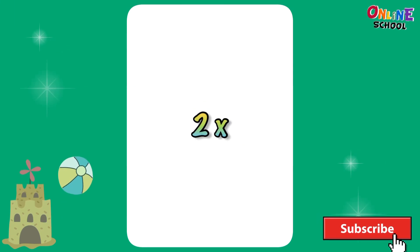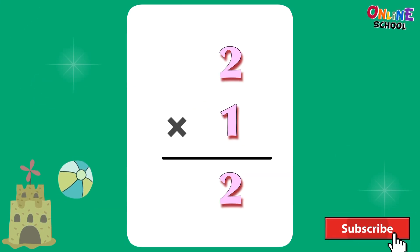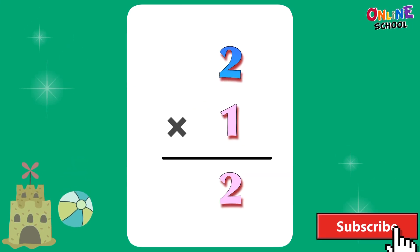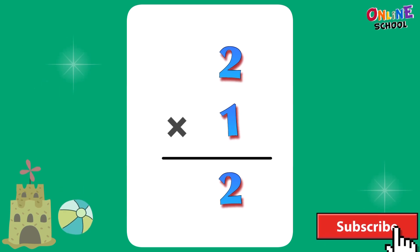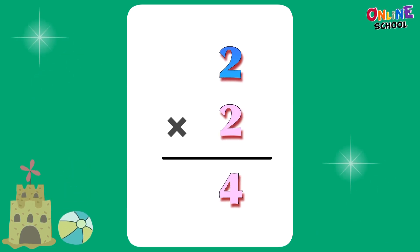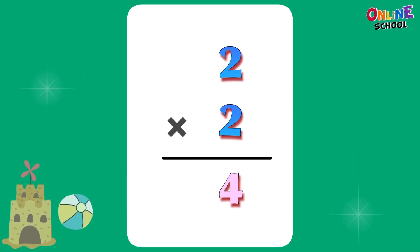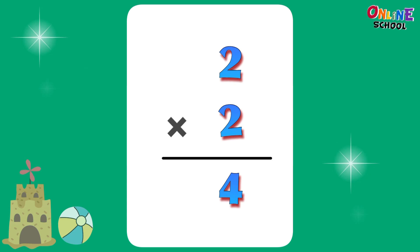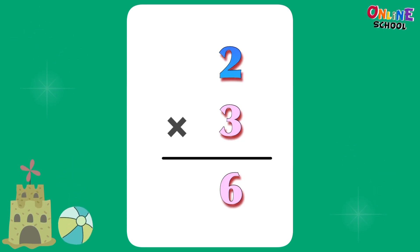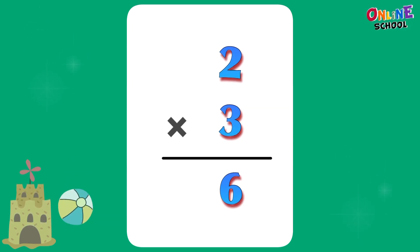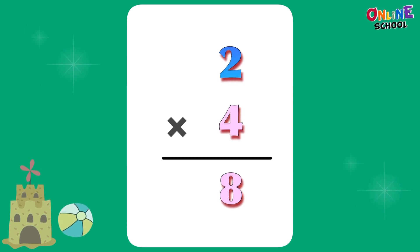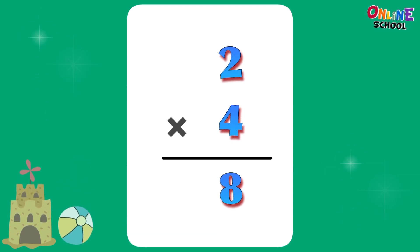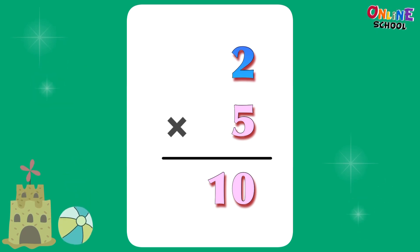2 times 1 equals 2. 2 times 2 equals 4. 2 times 3 equals 6. 2 times 4 equals 8. 2 times 5 equals 10.